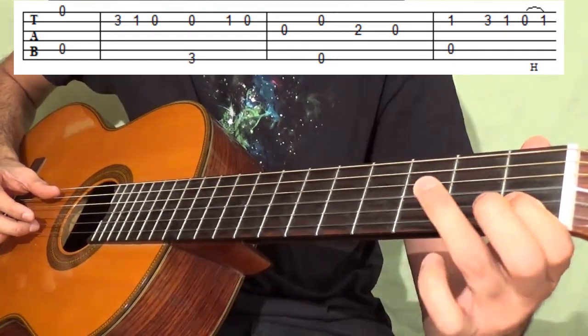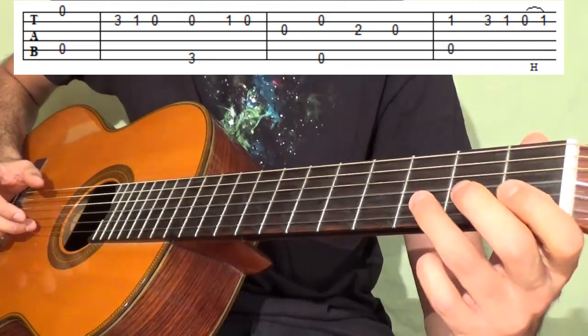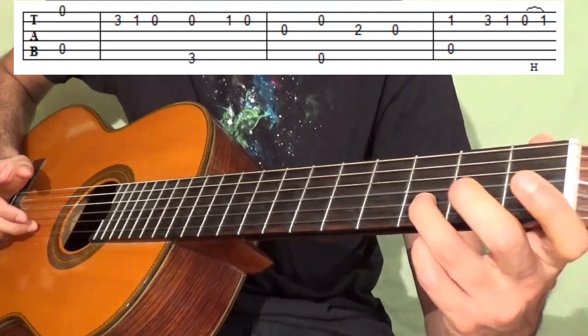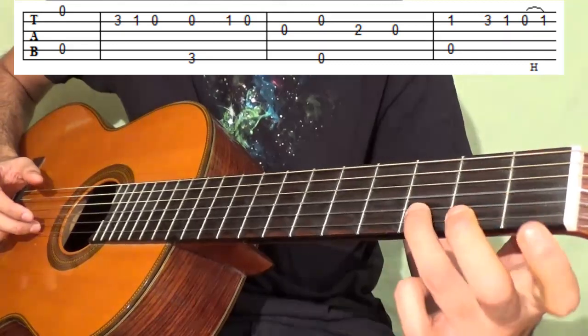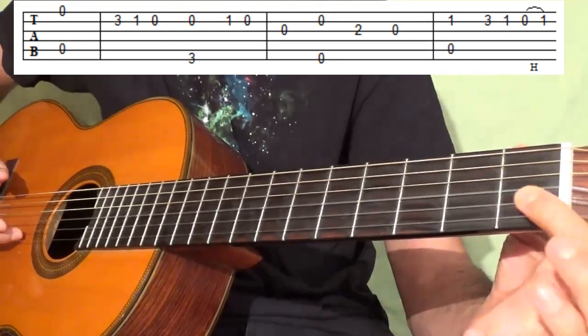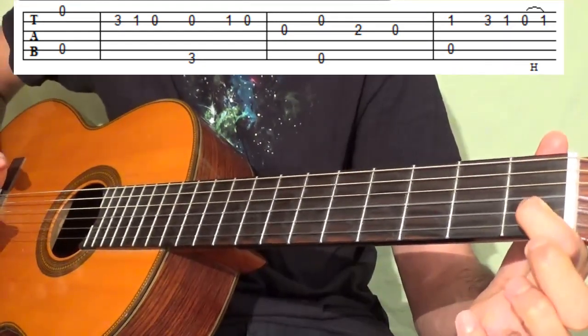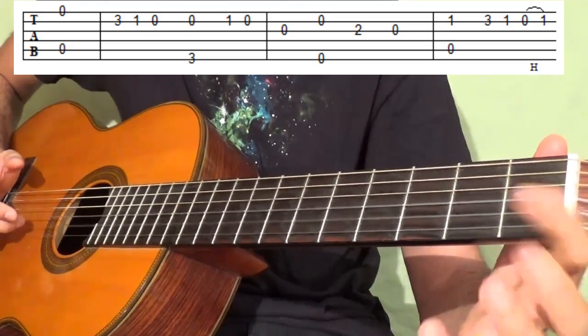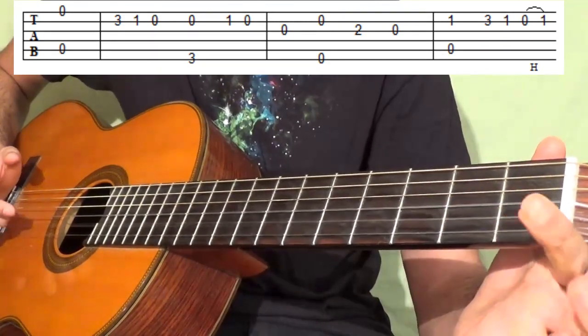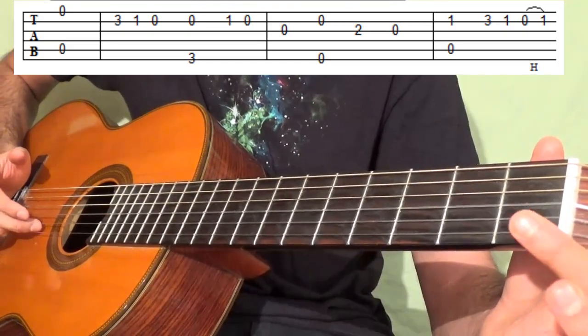Now we're going to pick 3-1-0-1 all on B and it's done a little bit quicker. And what I do here is 3-1, open B, then hammer onto that 1. So you only pick that once, open, hammer.